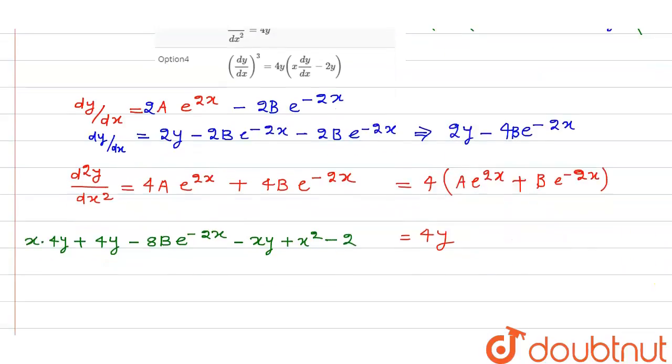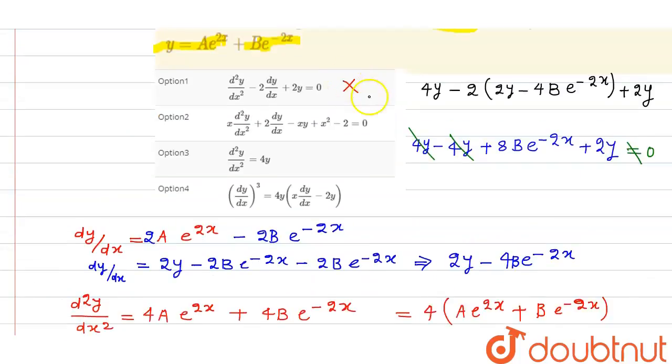Now this thing gets not cancelled out because this is 4xy and this is 4y and this is something around, this cannot be 0. So option first and option second is incorrect.